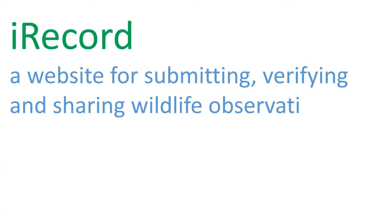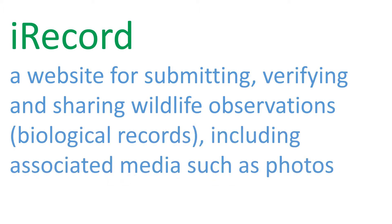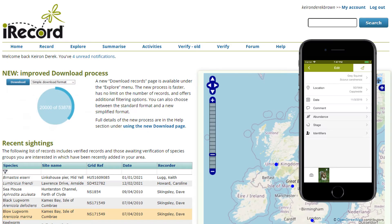What is iRecord? iRecord is a website for submitting, verifying and sharing wildlife observations, also known as biological records, and that includes associated media such as photos. iRecord is free to use and was created by the Biological Records Centre to support naturalists and biological recording schemes and societies.